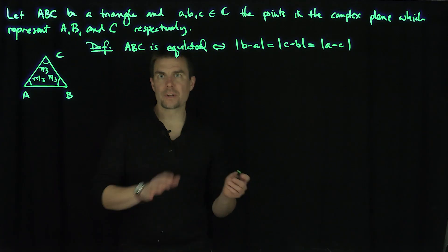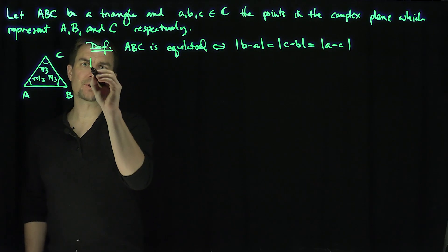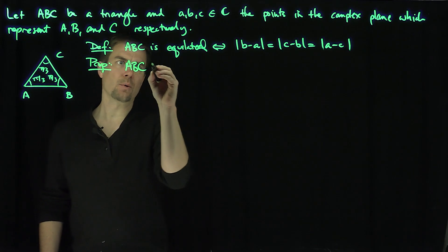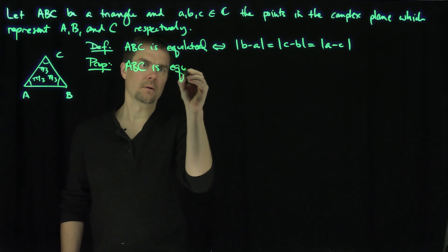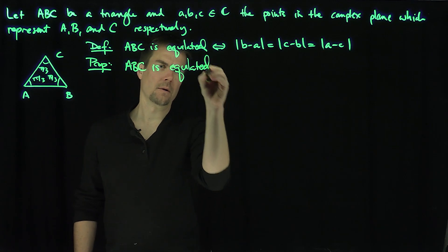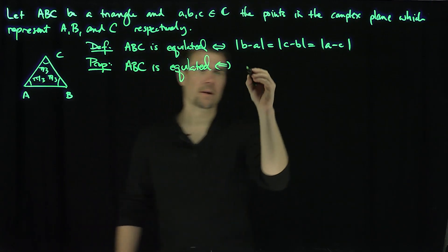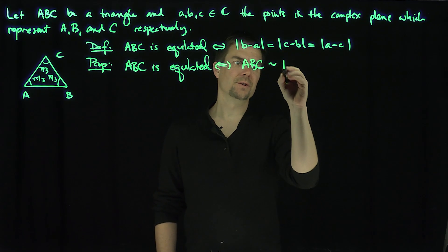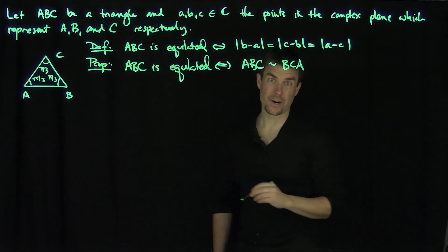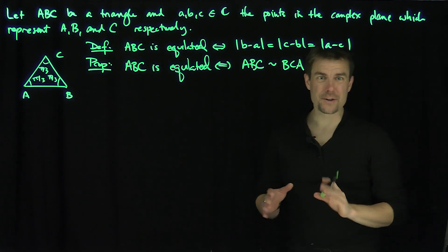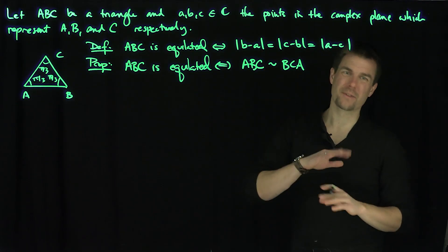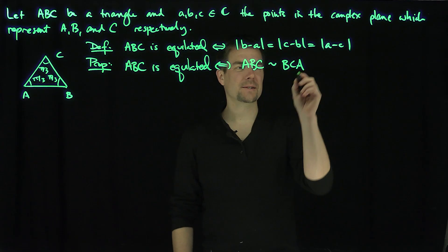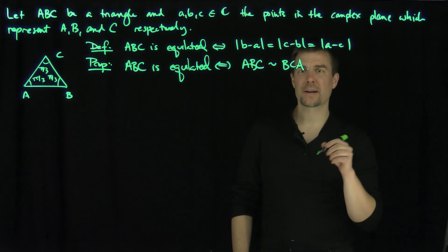We also have a neat proposition: ABC is equilateral if and only if triangle ABC is similar to the cyclic triangle BCA. That's straightforward to prove. If you're rusty on high school geometry, try proving this if-and-only-if — it's a very easy proof. Now, the cool thing is we can use complex numbers.